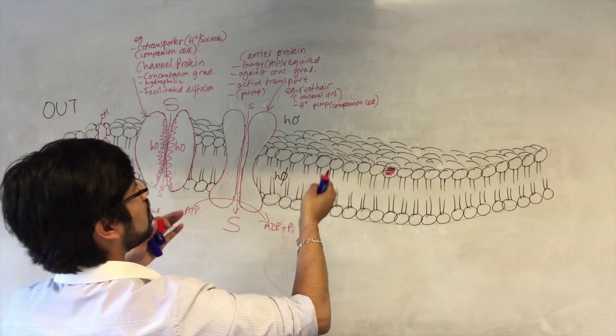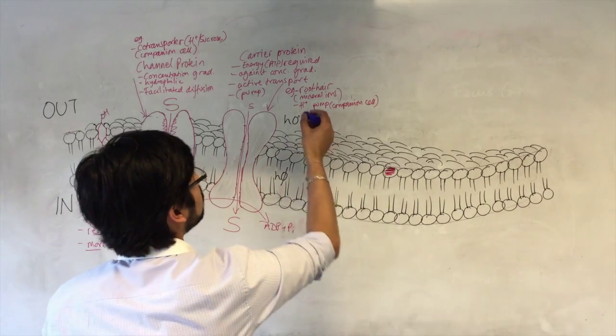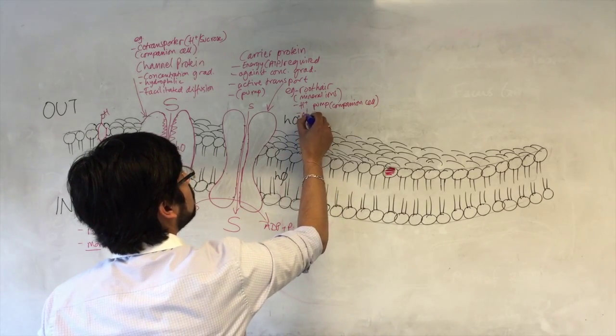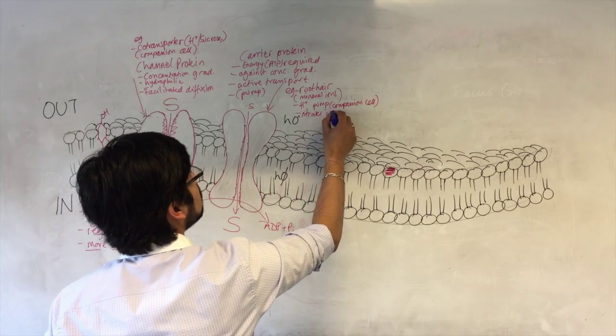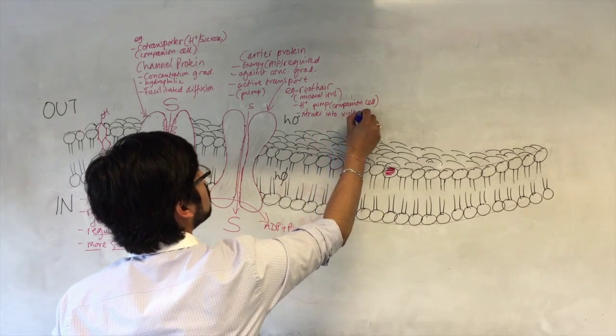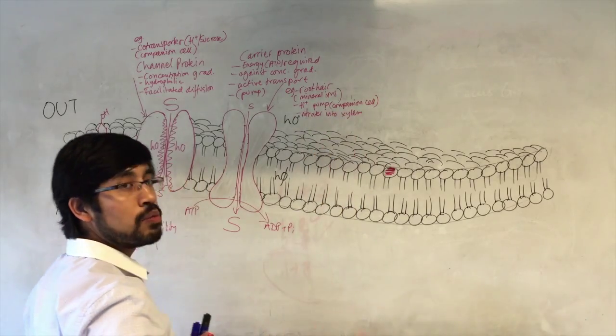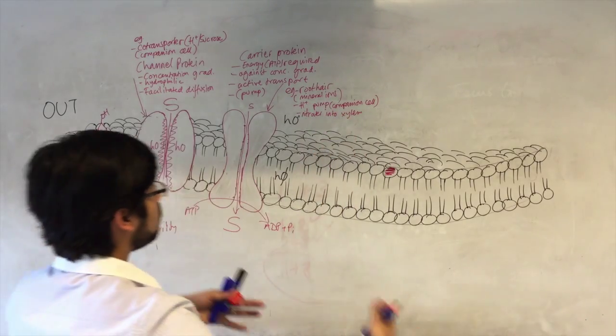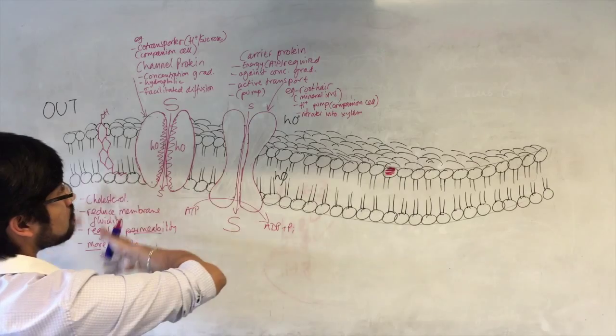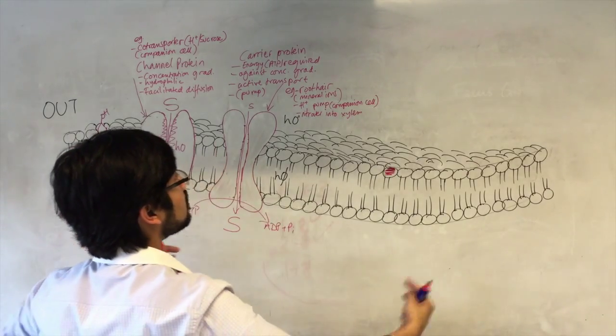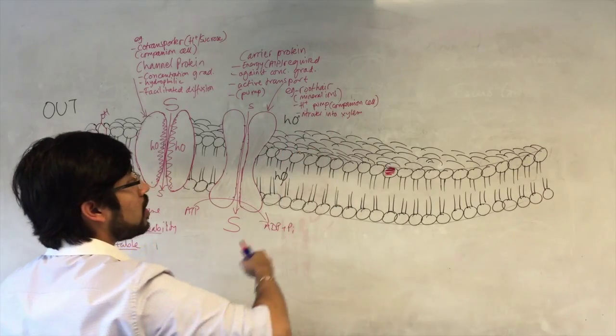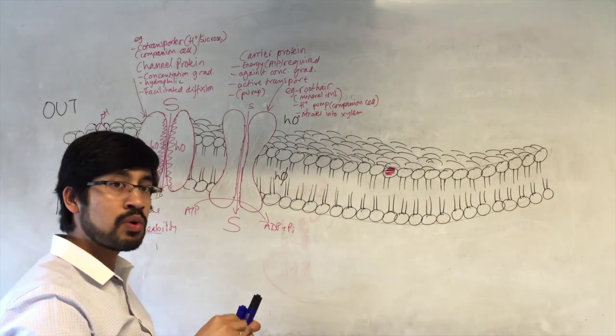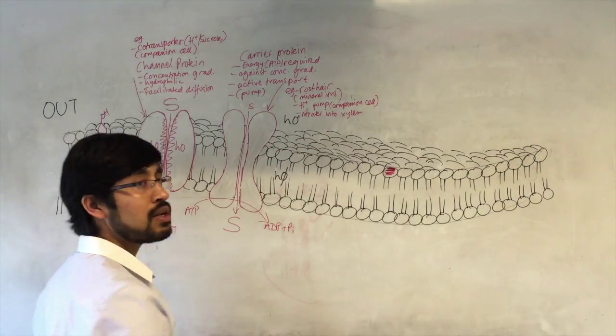Other examples also include the active transport of nitrates into xylem when we were talking about movement of water from the root into the xylem. From the root hair cell into the xylem. These are all examples of active transport. You might come across others in the course. Make a note. It requires a protein like this.